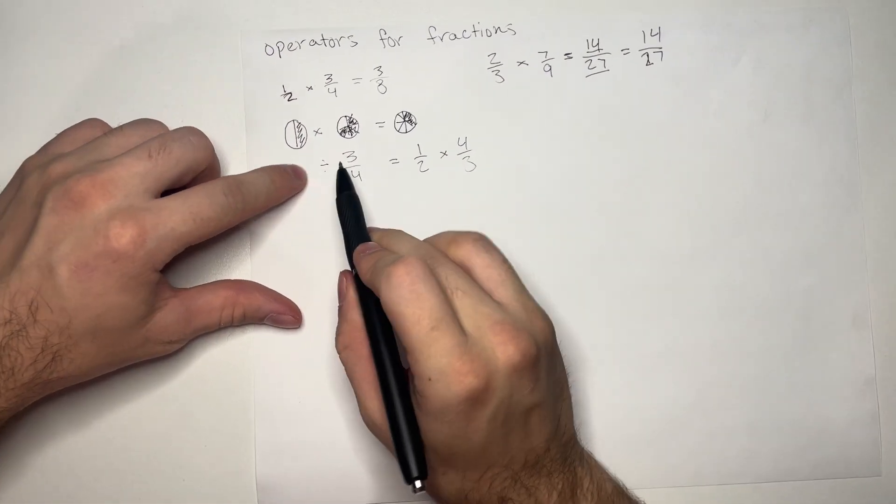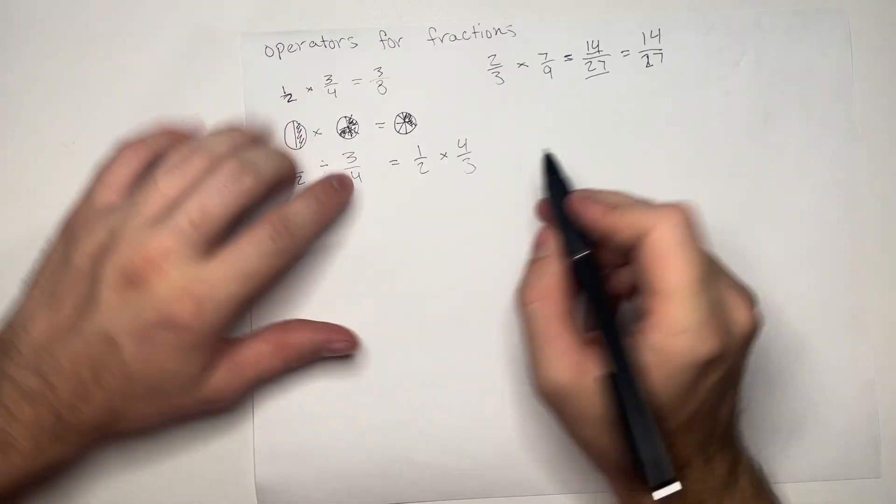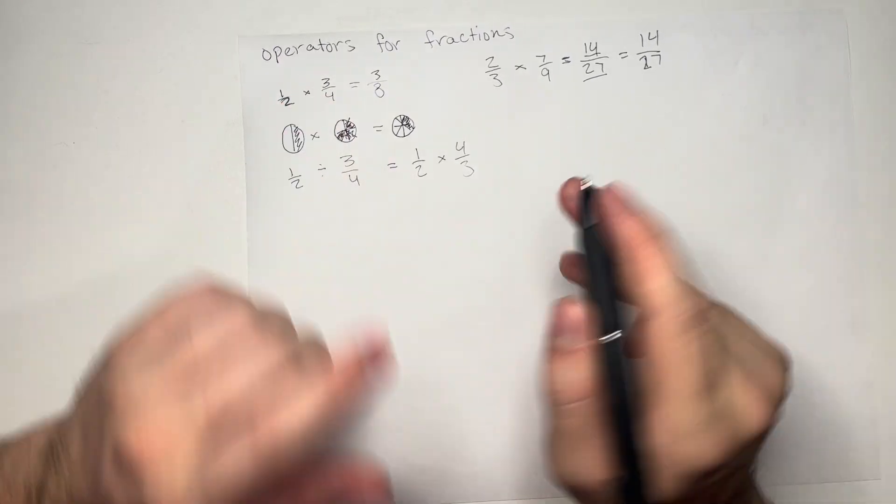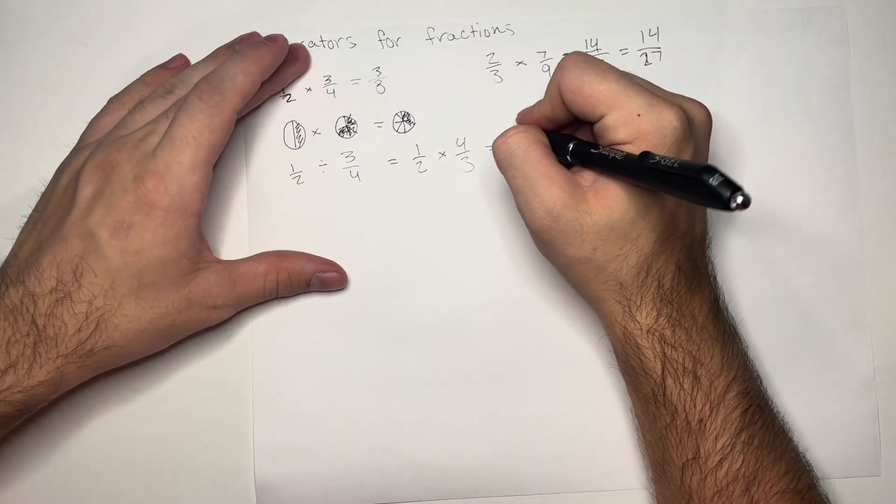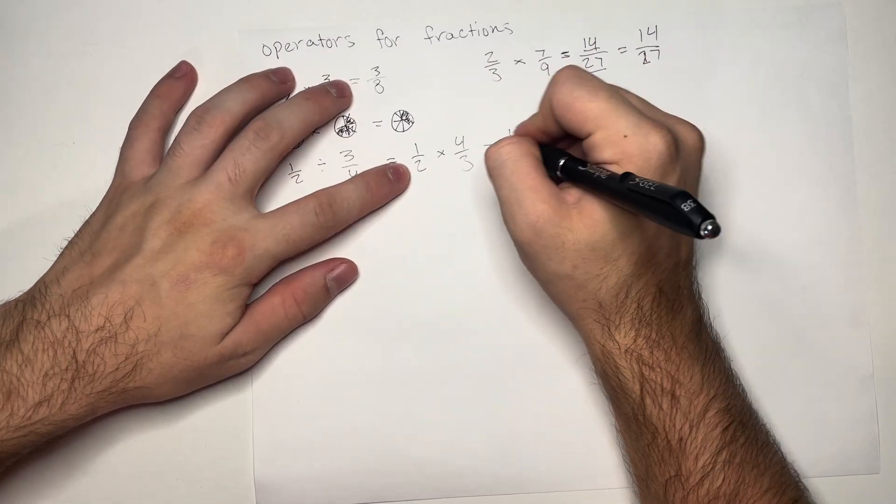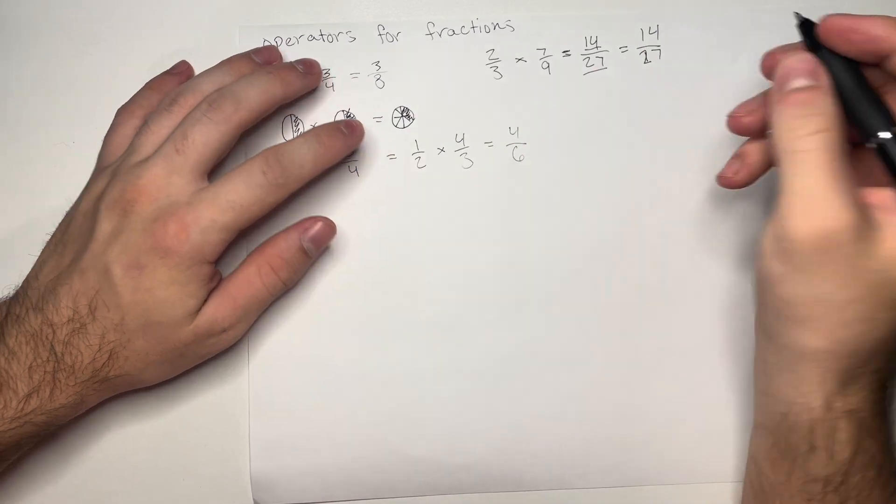So, keep, change, flip. And now, we can go ahead and do our multiplication that we learned before. 1 times 4 is equal to 4. 2 times 3 is equal to 6.